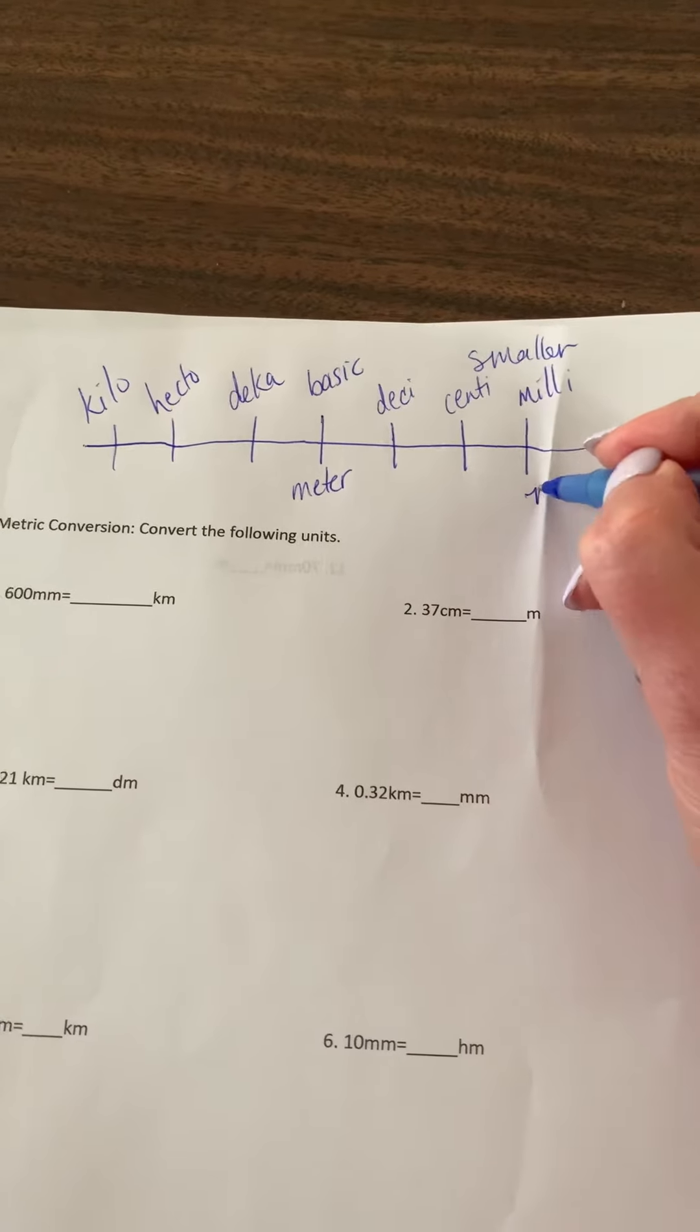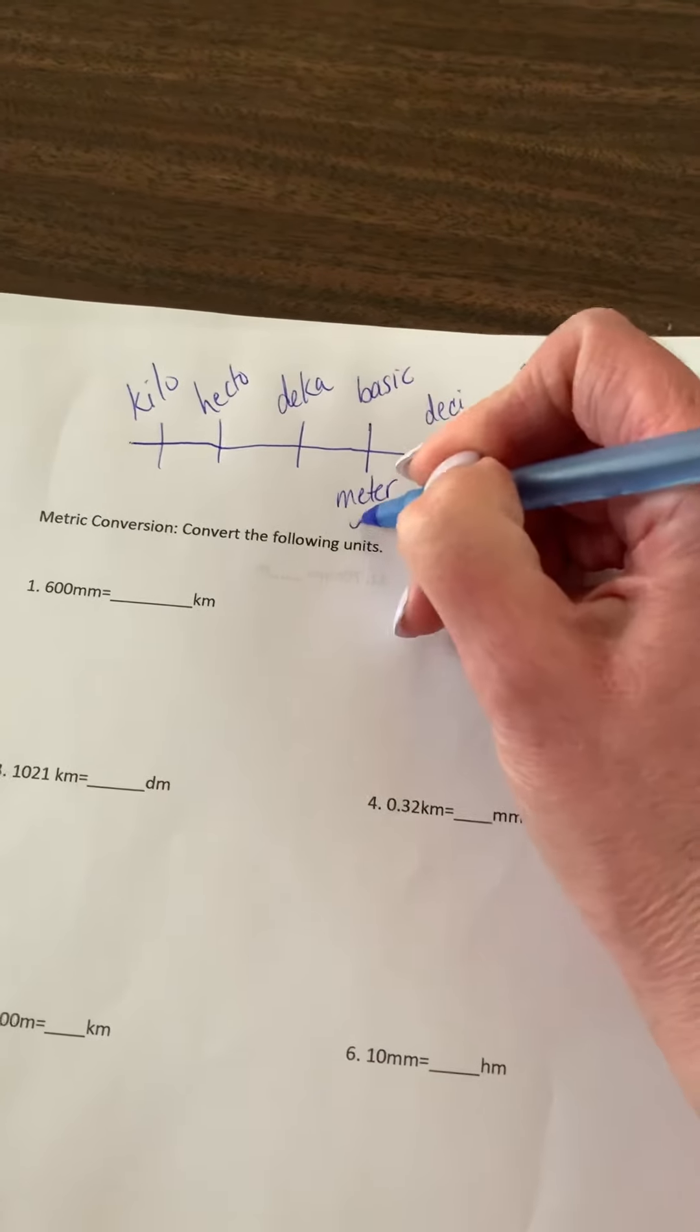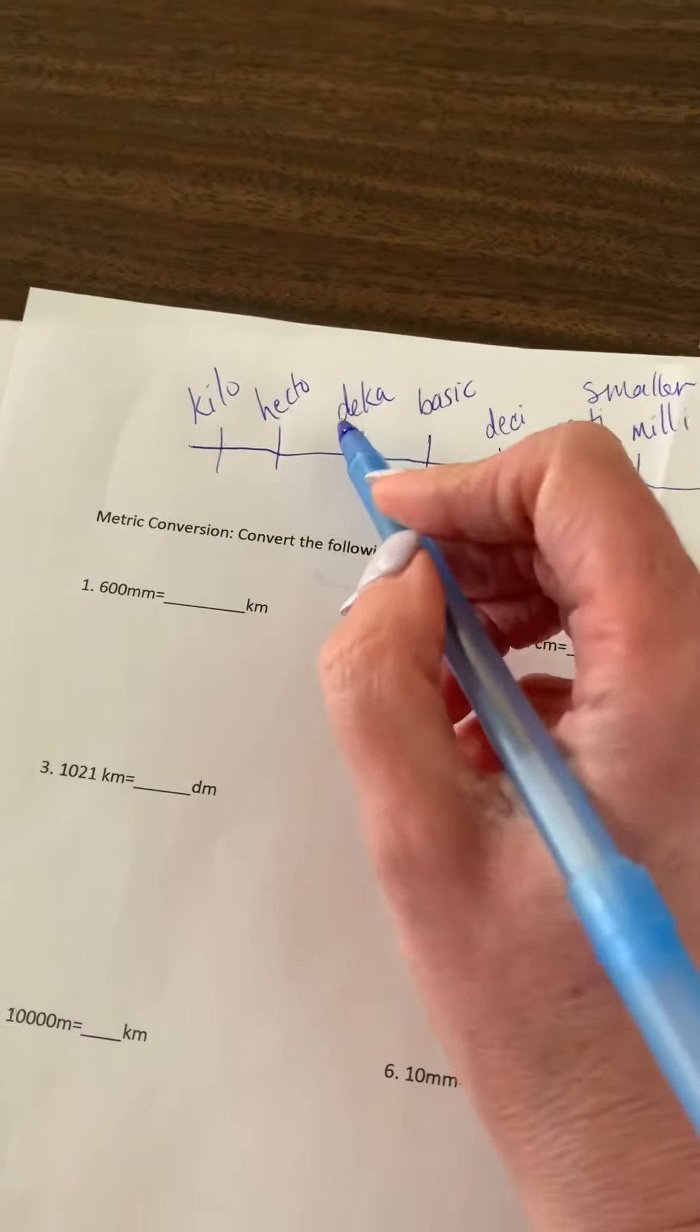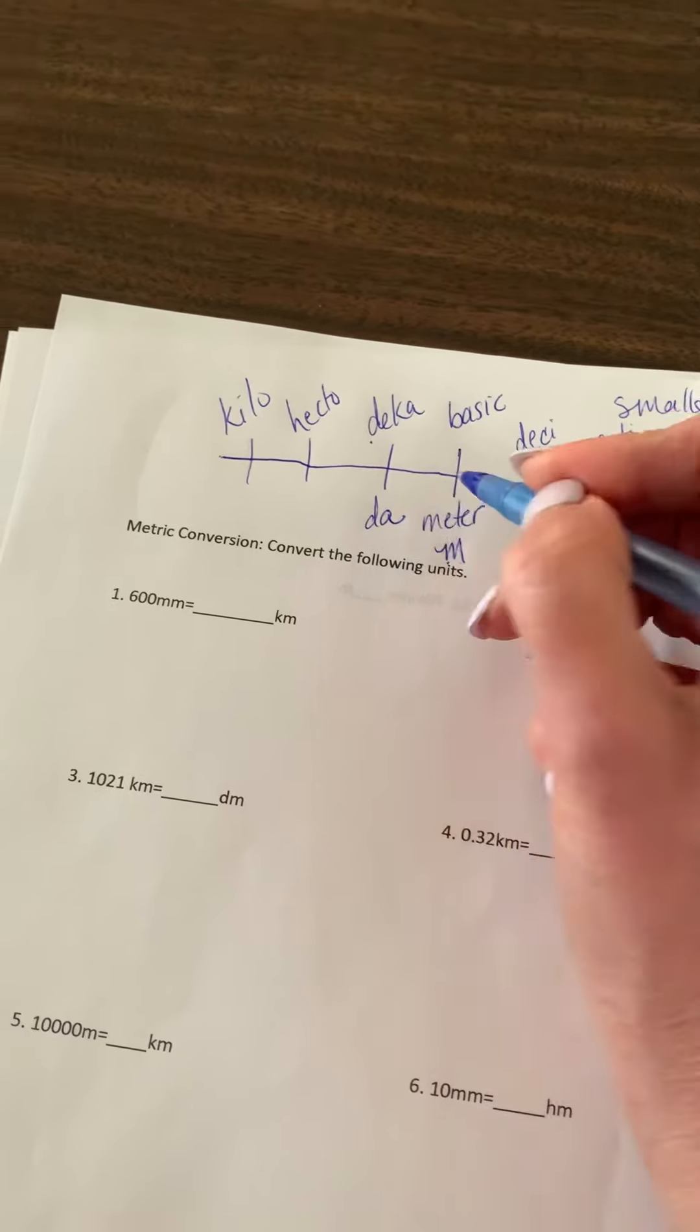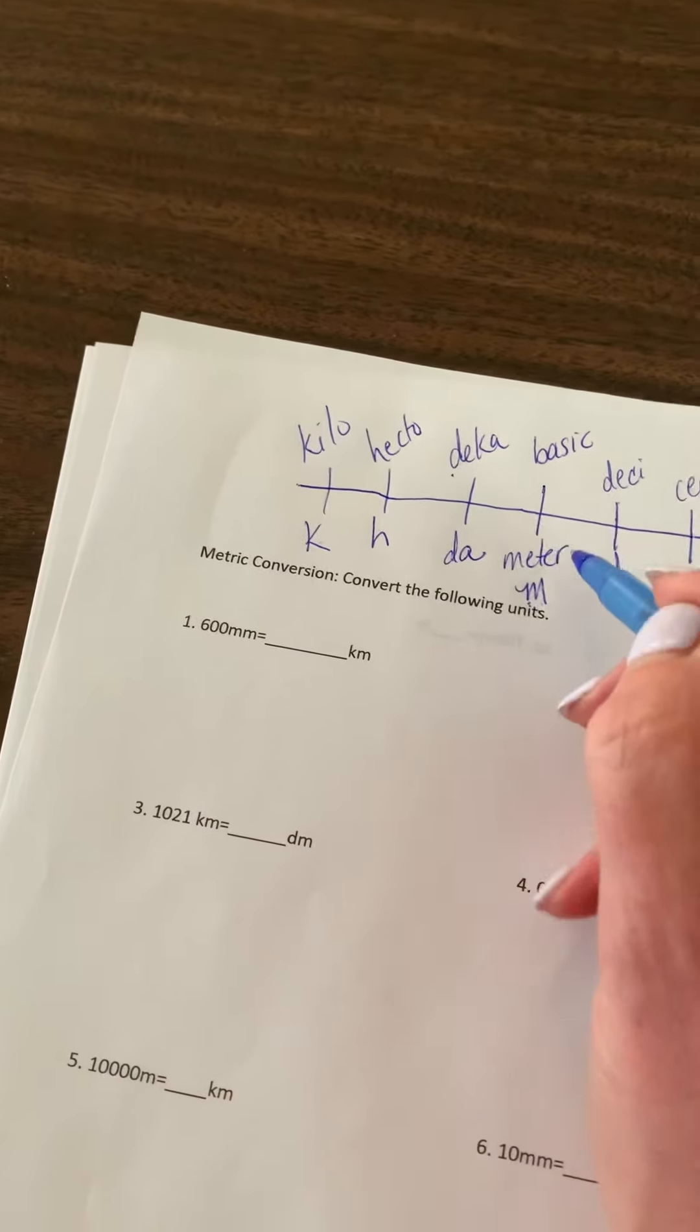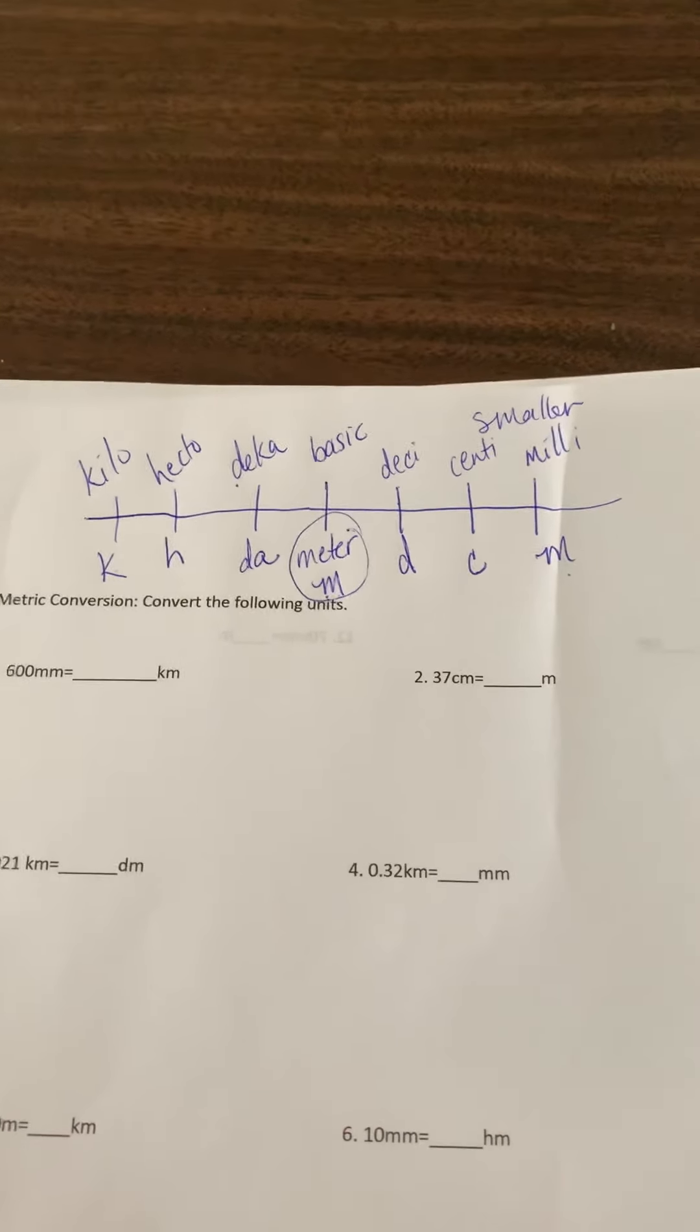And so M is the prefix, the letter C, D, this would be M. So then when we put it together we get millimeter, centimeter, decimeter. Now deca starts with the same letter, so remember it's a little bit different, it's D-A, and then hecto is H and kilo is K. So these are called prefixes and we add them together with the basic unit to create other units of measurement.